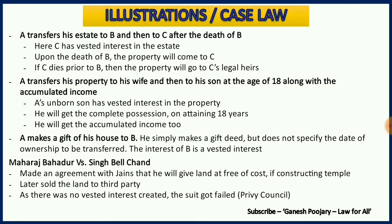Then comes the case law: Maharaja Bahadur versus Singh Belchand — a very important case law as far as vested interest is concerned. The Maharaja told that he would give a hill as a grant free of cost if the Jains constructed a temple on that hill. An agreement was made between the Maharaja and the Jains. However, the Jains had not decided to construct the temple at that time, and meanwhile the Maharaja sold the property to a third party. When the Jains came to construct the temple, the third party was enjoying possession. The Privy Council held that there was no vested interest created in the agreement, and the suit failed.